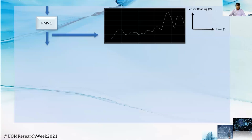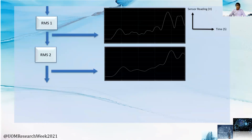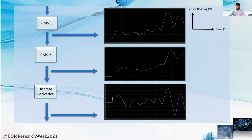Then, we send this data set through two cascade RMS functions with a fundamental frequency of 50 Hz. Our intention is to minimize the oscillations of the signal to make it convenient for decision making and data extraction. After that, we take its discrete derivation function to neglect any steady-state condition, as we are concerned about sudden variations in the current flow at any fault.